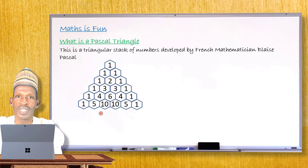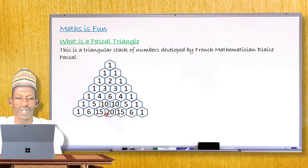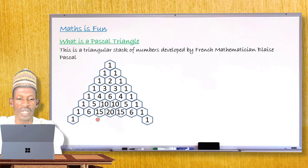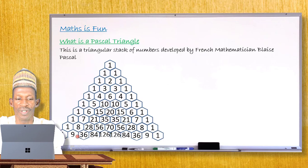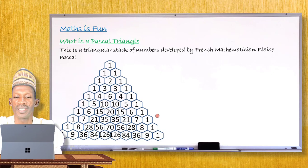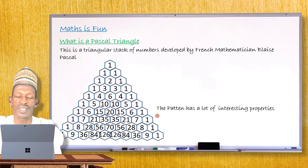Each row begins with one and ends with one, and every number in between is the sum of the two numbers directly above it. Continuing: row seven is 1, 6, 15, 20, 15, 6, 1; row eight is 1, 7, 21, 35, 35, 21, 7, 1; and further rows follow the same pattern, with the last shown row containing 1, 9, 36, 84, and so on. This arrangement has very interesting properties which we shall explore in subsequent lessons. Thank you for your attention.